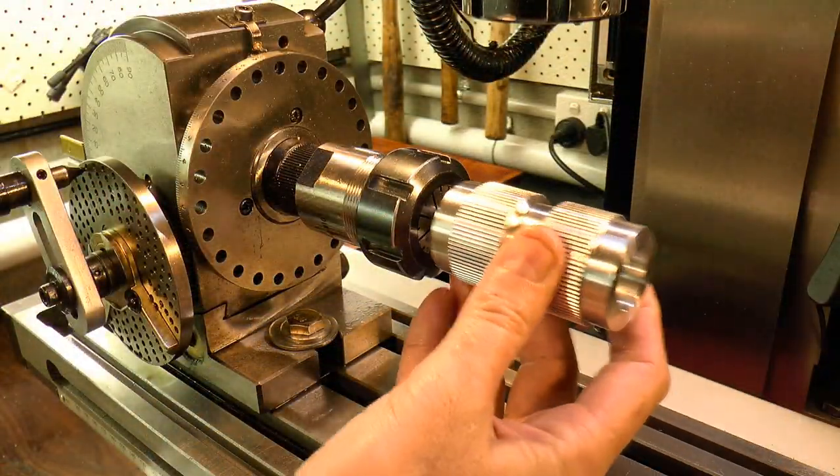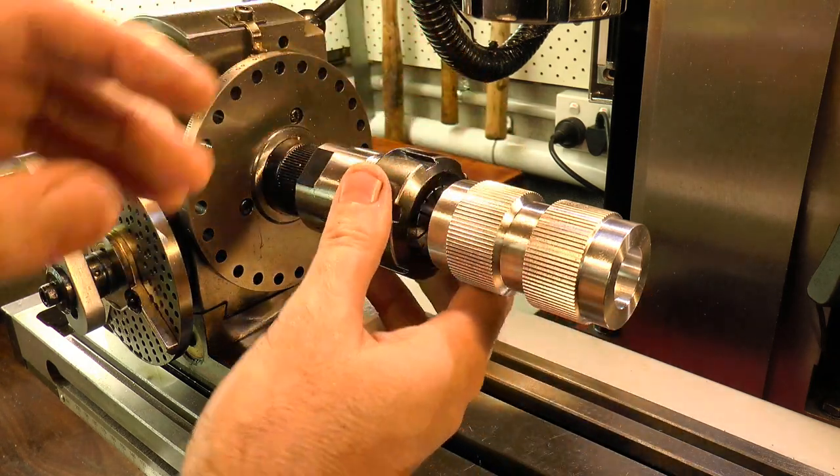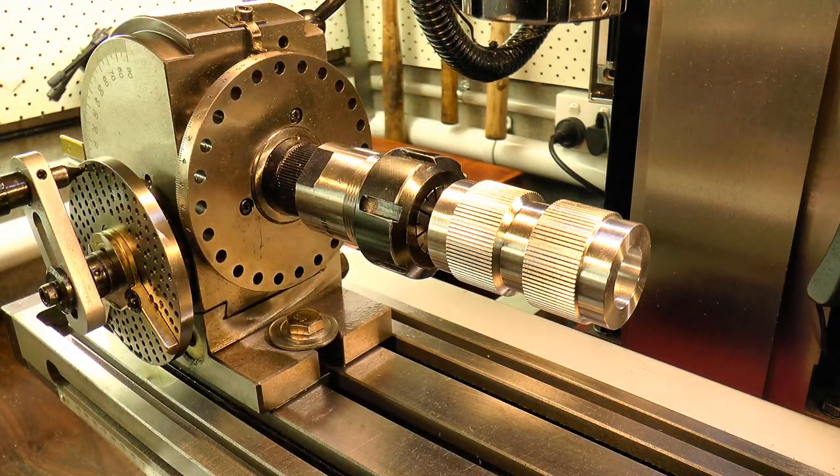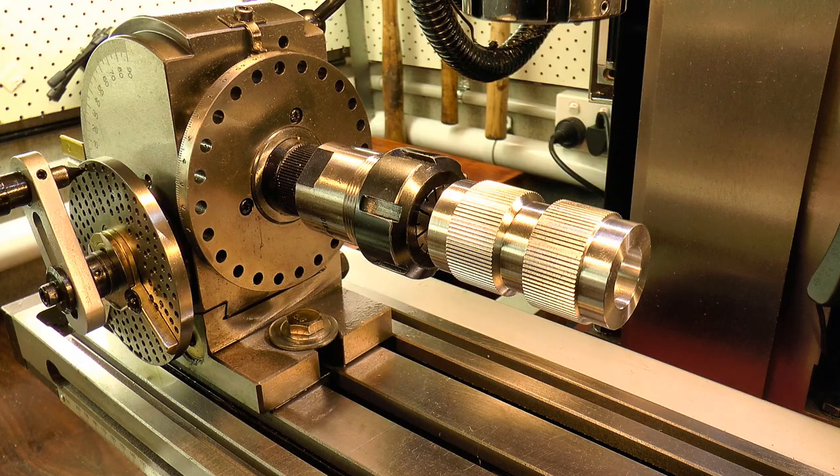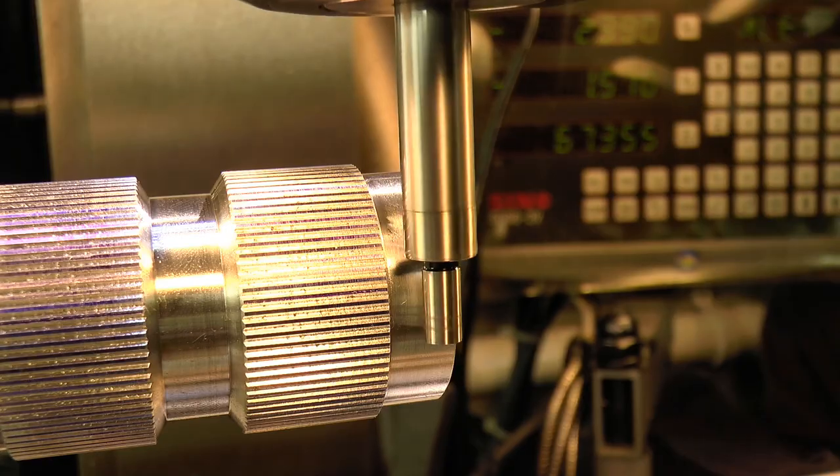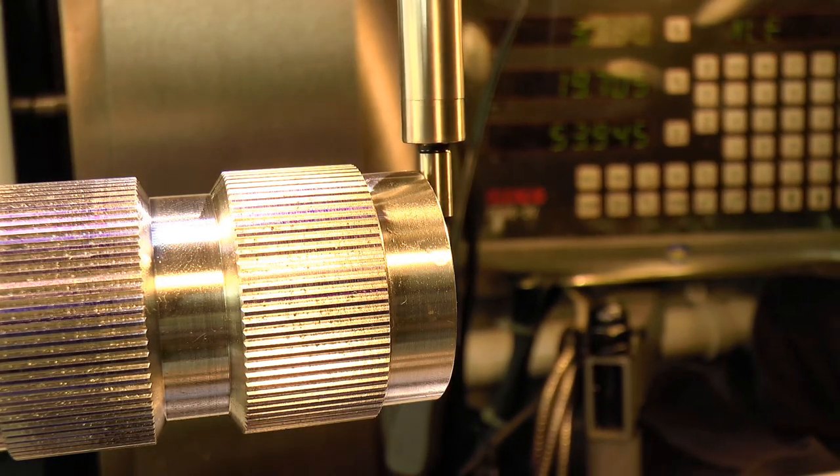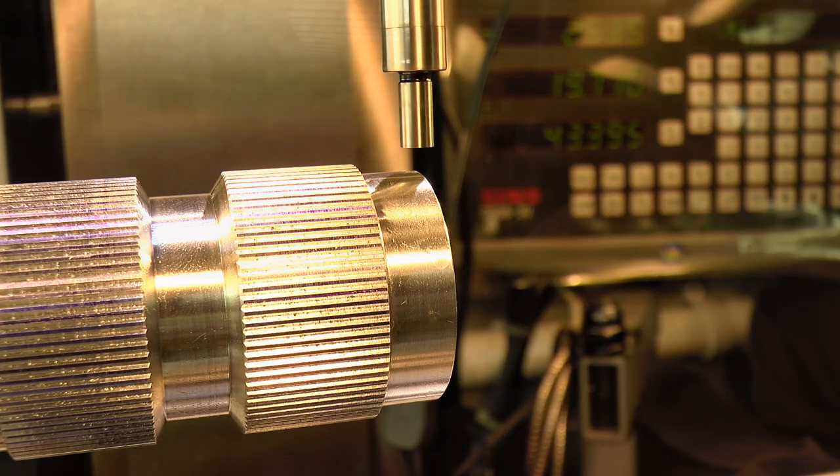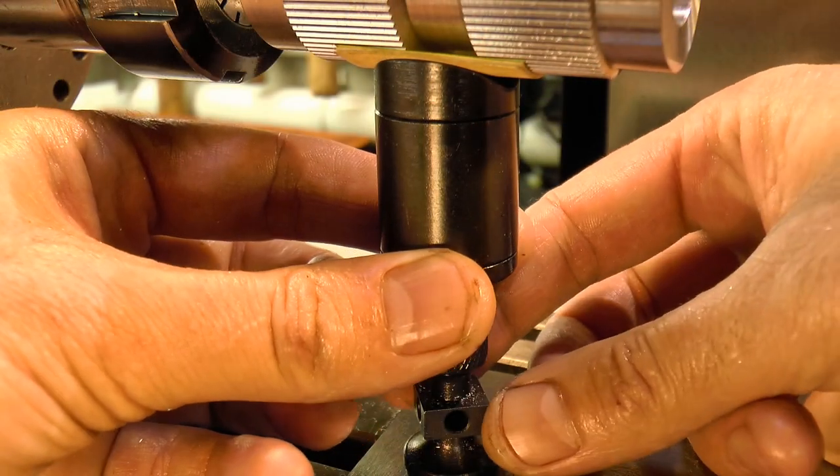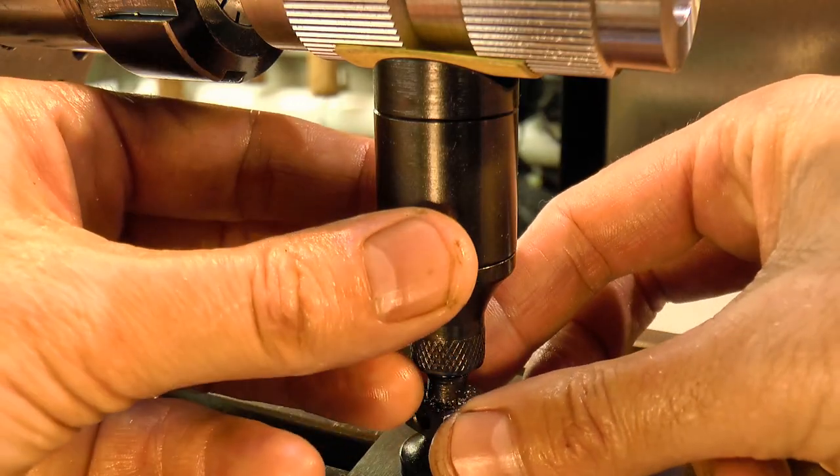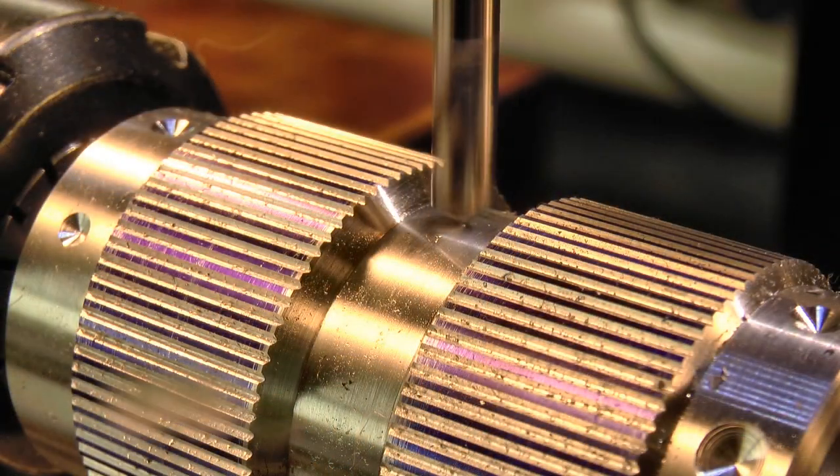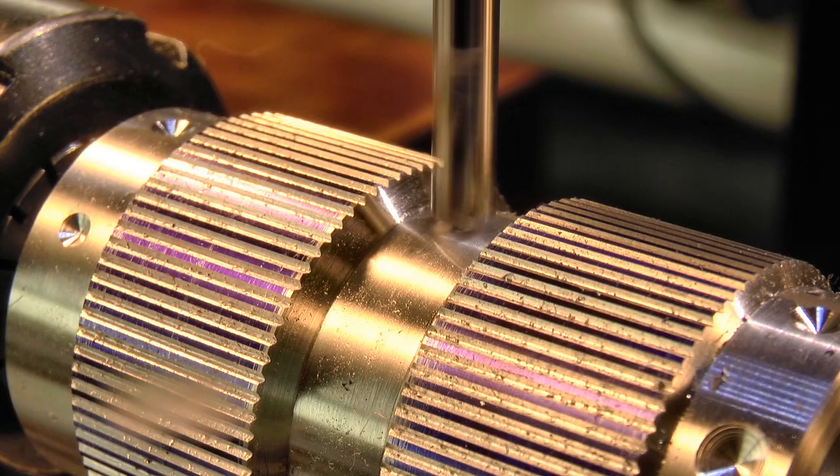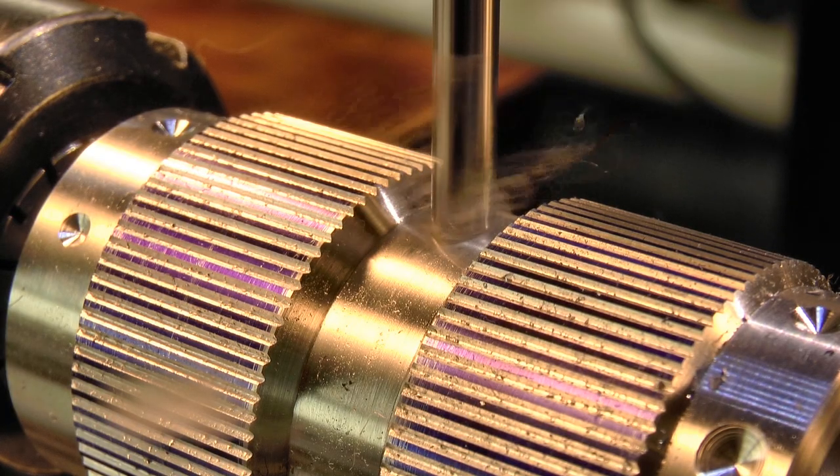I then mounted the part on the mill, held in a dividing head with an ER collet chuck. The spindle was put in line with the axis of the part using an edge finder, and this time I used a bit of support using this little machinist jack underneath the part. The downward force from the drill is significant and I wanted to keep the deflection to a minimum. I then drilled and threaded the handle and grub screw holes.